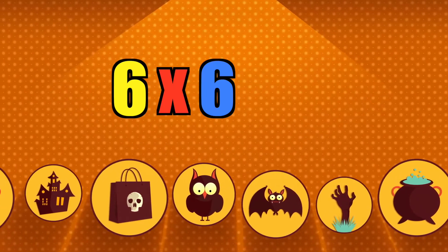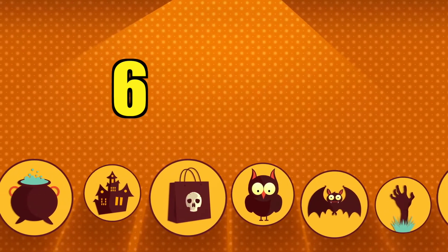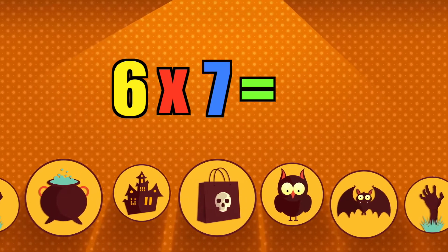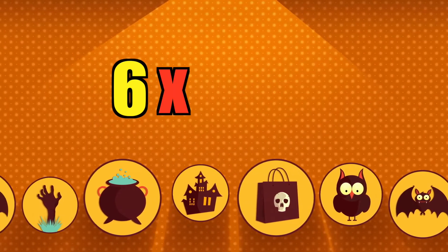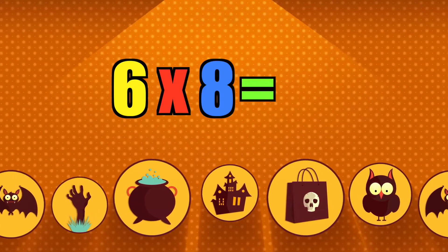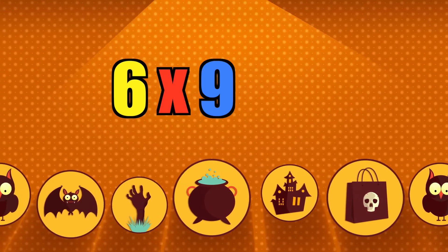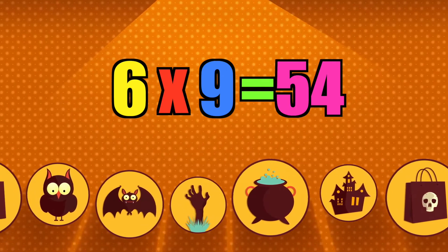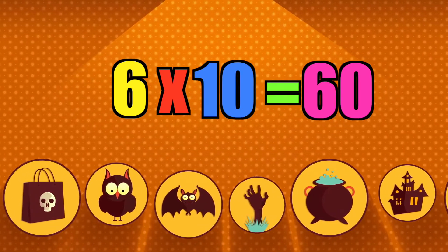Six times six is thirty-six. Six times seven is forty-two. Six times eight is forty-eight. Six times nine is fifty-four. Six times ten is sixty.